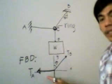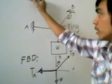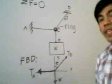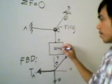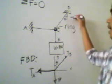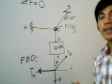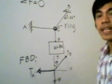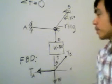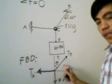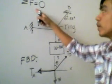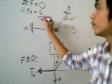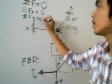We are now ready to solve for forces TA and TB given a value of W. Let's say W equals 10 Newtons. We will use the equilibrium equations. Since we are using Cartesian coordinates, we rewrite summation of forces equals zero by considering the x-direction: summation of forces in x equals zero, and all forces in the y-direction: summation of forces in y equals zero.